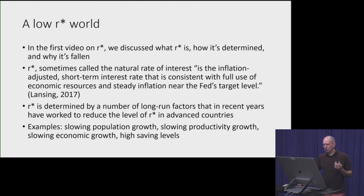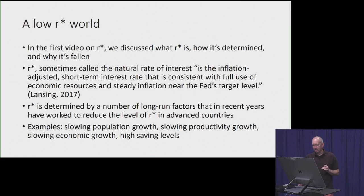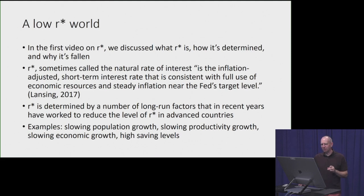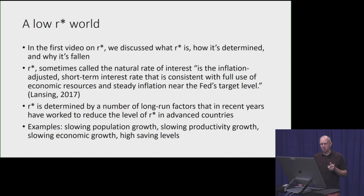In our first video, we discussed what R-STAR is, how it's determined, and why it's fallen. R-STAR is also sometimes called the natural rate of interest, and by Lansing's definition from 2017, it is the inflation-adjusted short-term interest rate that is consistent with full use of economic resources and steady inflation near the Fed's target level. In other words, it's when the economy is operating at full employment at an inflation rate of around 2% — what's the real interest rate observed at that point? That's R-STAR.